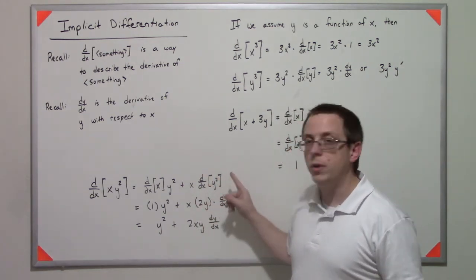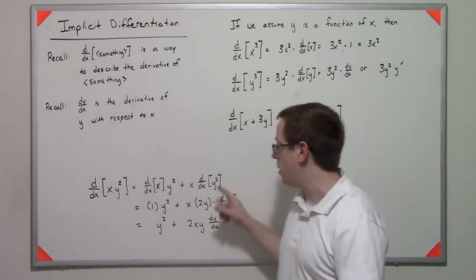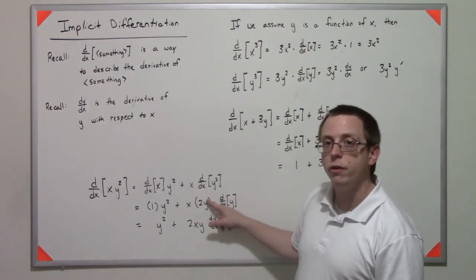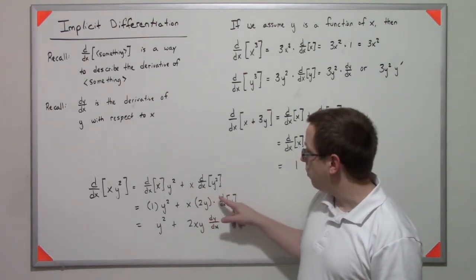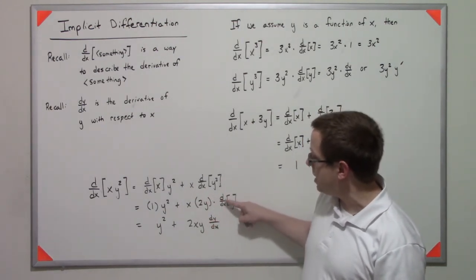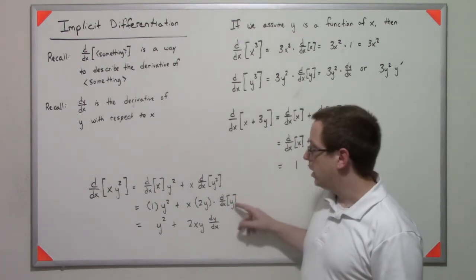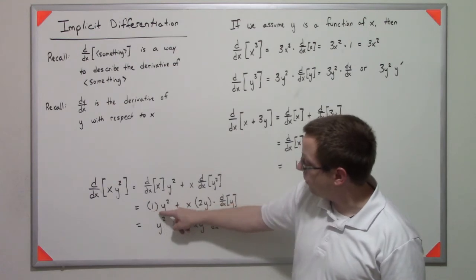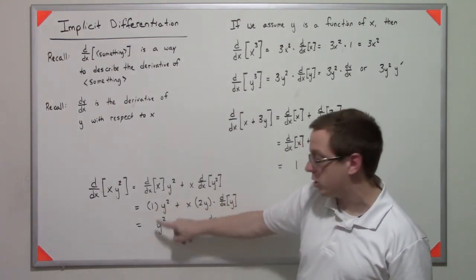We bring down the two, we subtract one from the power, and then we chain on this d/dx of y. Following through, this is one times y², which is y², plus 2xy dy/dx.